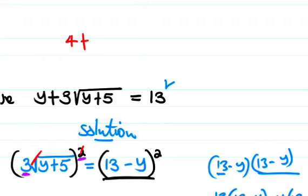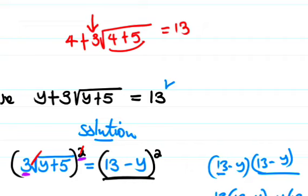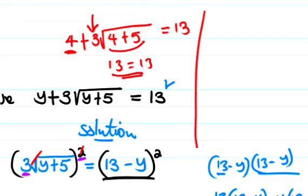Let's check y equals 4. 4 plus 3 root of 4 plus 5 equals 13. 4 plus 5 is 9, root 9 is 3, 3 times 3 is 9, plus 4 is 13. So 13 equals 13, it's correct.